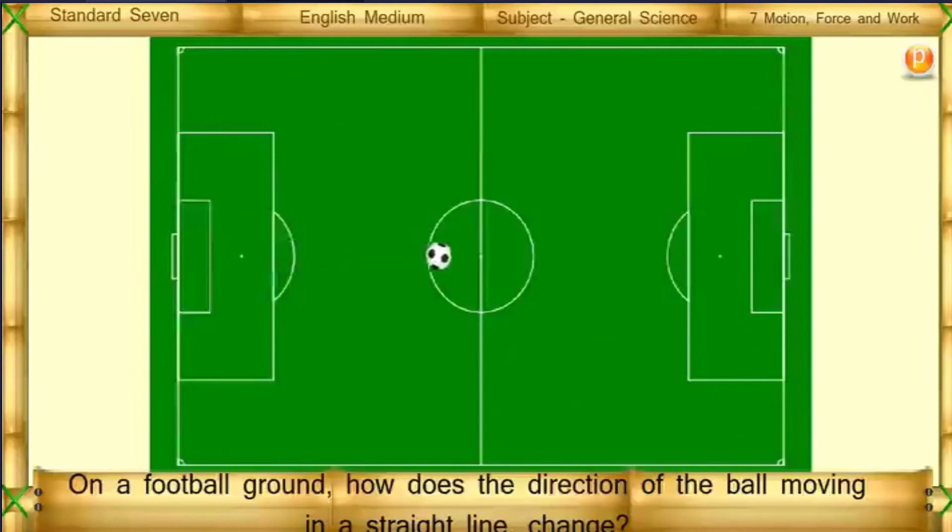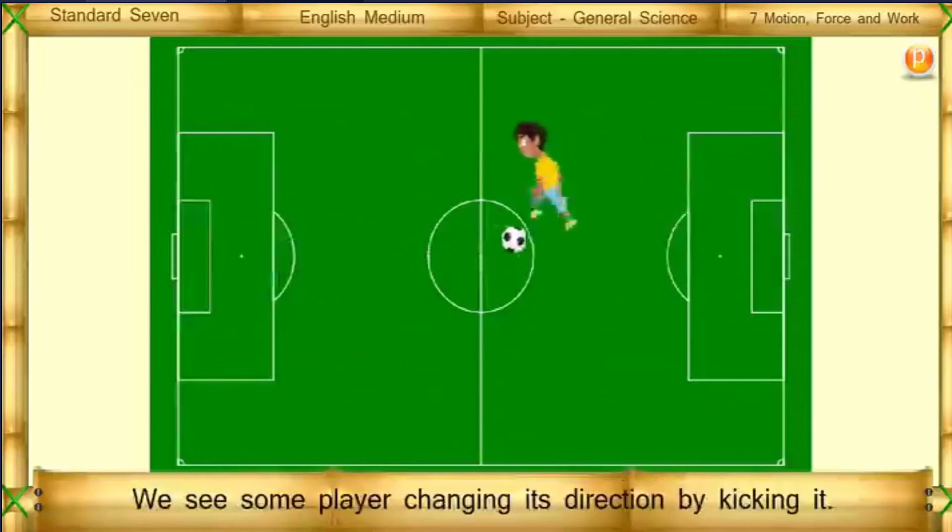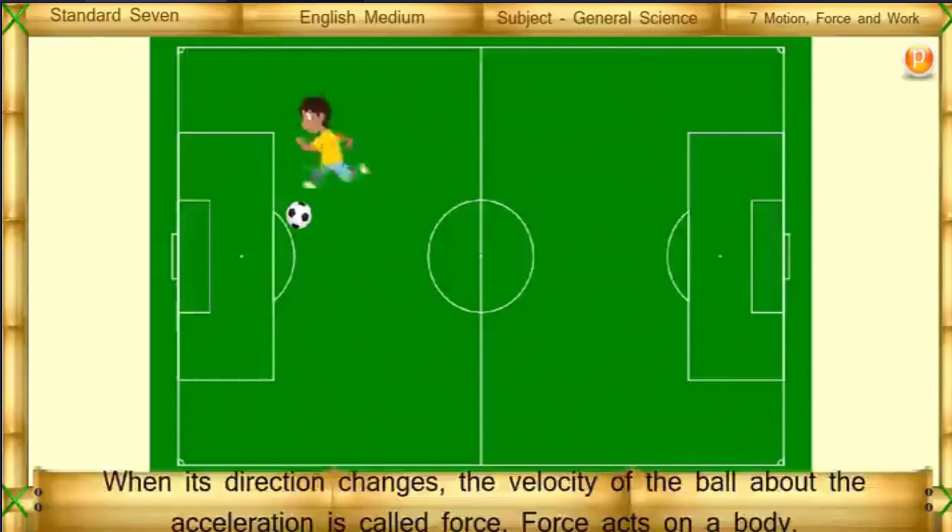On a football ground, how does the direction of the ball moving in a straight line change? We see some player changing its direction by kicking it. When its direction changes, the velocity of the ball changes. The cause of change in velocity, or the acceleration, is called force.